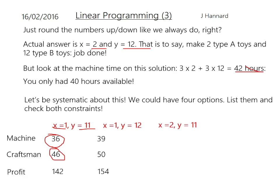Now x = 2 and y = 11. We get machine time = 39 — good. Craftsman time = 48 — good as well. That gives a profit of £152. And as we know from before, if it's x = 2 and y = 12, we get machine time = 42 and craftsman time = 52 — both of them break the constraints, so we don't care about that option.